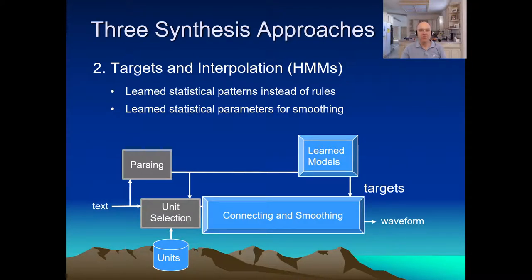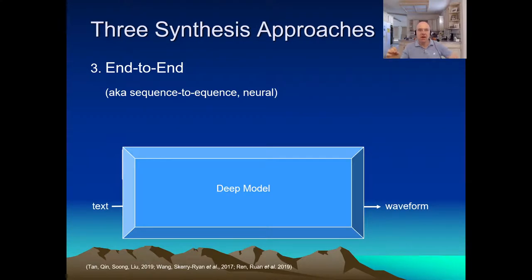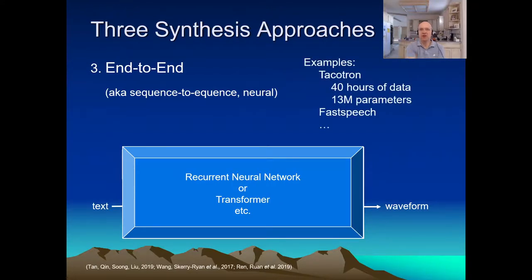The third generation of synthesis systems are end-to-end systems. These have no intermediate representations — nothing in them that is designed at all. Rather, they map directly from a grapheme sequence of letters or characters to a sound sequence. This requires deep neural networks, and not just any networks, because prosody is context-dependent. You can't just choose the prosody of one word by looking at that one word alone, so it requires recurrence or attention to model those context effects. Since they have to learn everything, they require much more data — for example, Tacotron requires some 40 hours. As these systems are completely black box, there is no way to understand or control them, but both are active research topics.